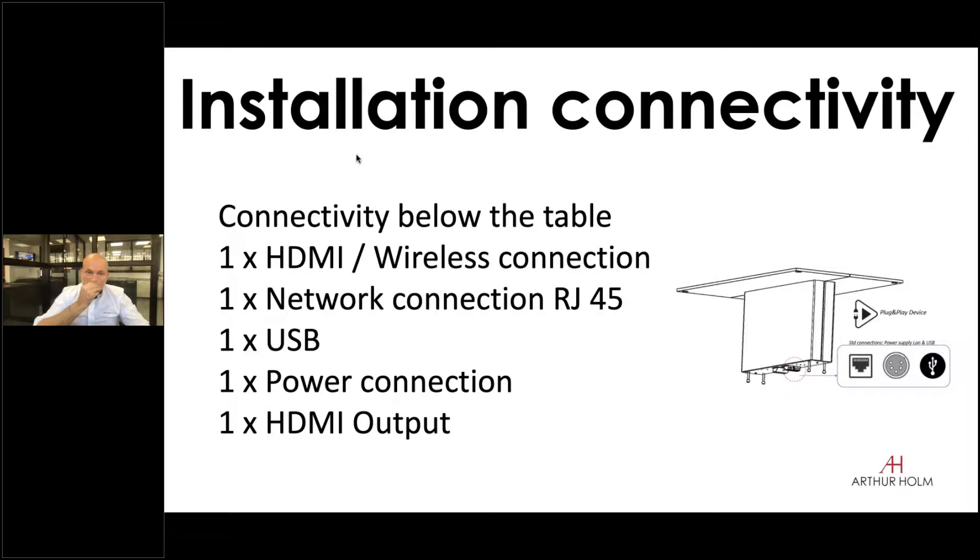Installation wise, we have two types of connectivity. We have the connectivity on a daily base which everything takes place on top of the table beside the display. For the installation part, we have that underneath the table. Here we have one HDMI connector which can be used for a wireless interface, you also have a network connection to connect to your network, you have a USB connection, you have power and you also have an HDMI output. You want to have that if you want to transmit what is taking place in the Dynamic 4 to somewhere else, maybe a larger display in a different room.